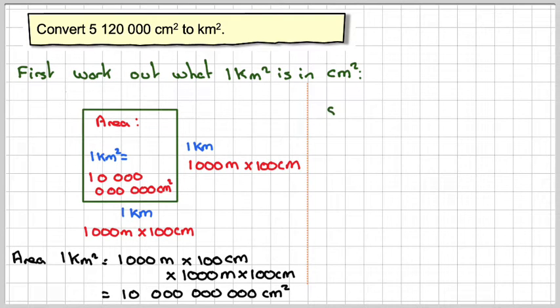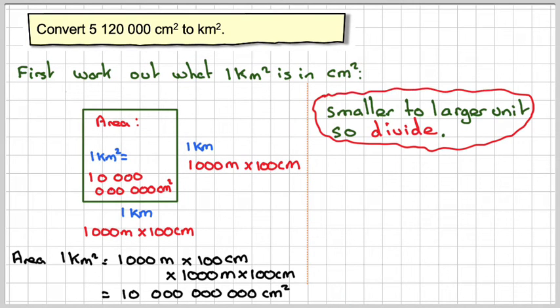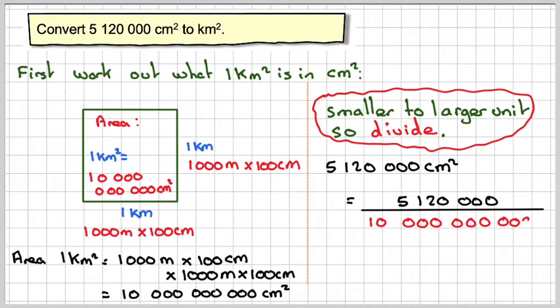So here we are going from a smaller unit to a larger unit, so we will divide by the conversion rate. So 5,120,000 centimeters squared is going to be 5,120,000 divided by 10,000,000,000. So that's 1 with 10 zeros on.